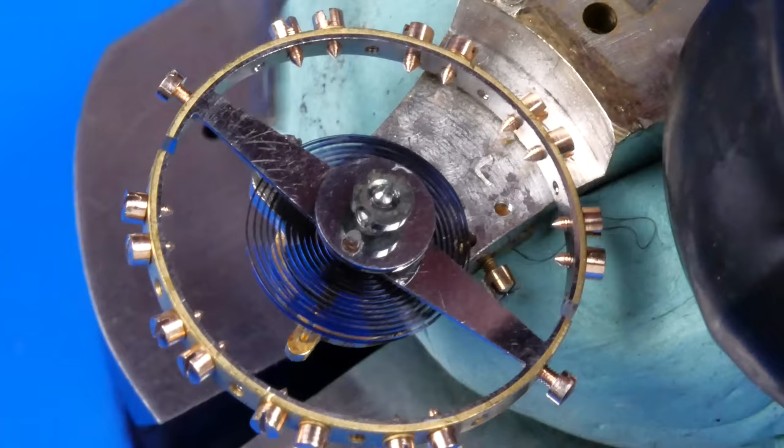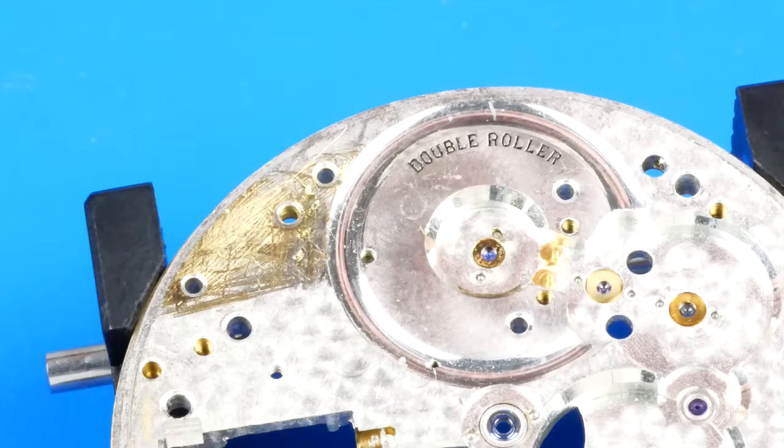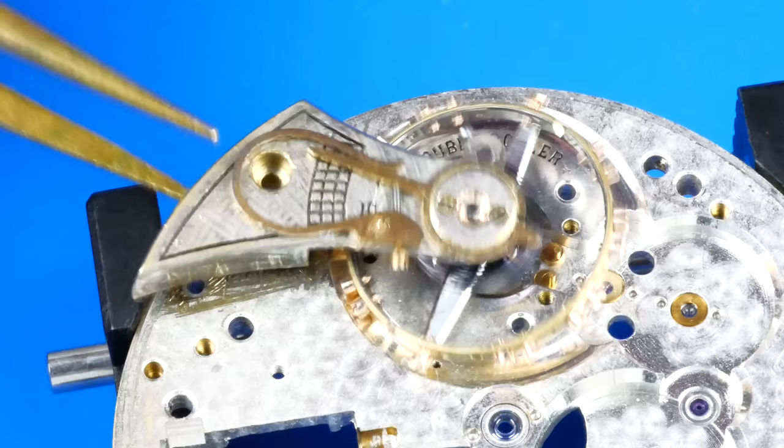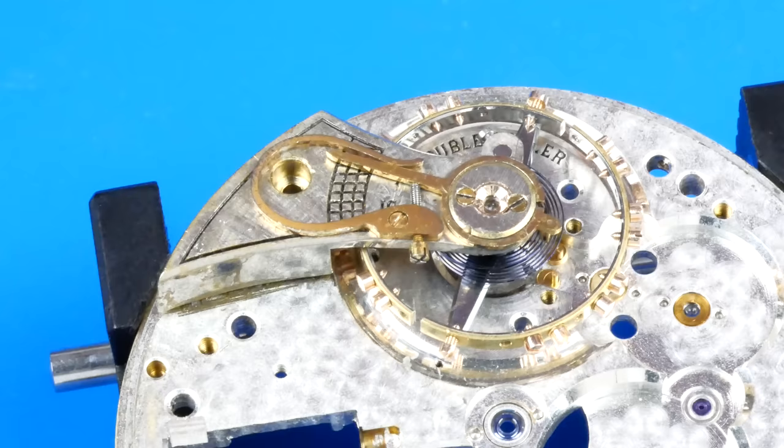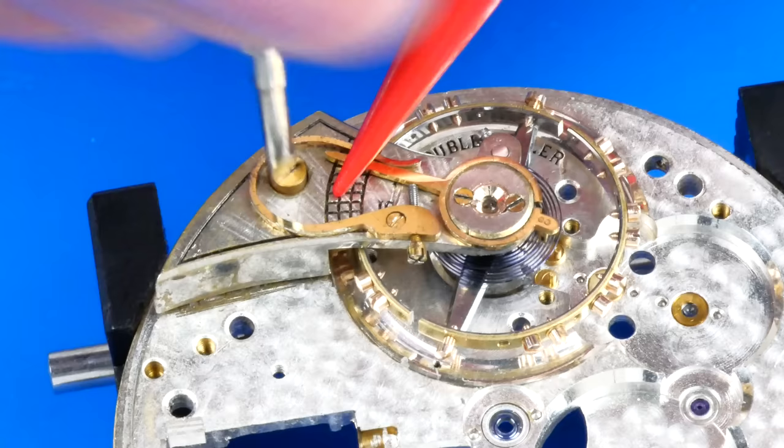The balance is reinstalled to the cock by inserting the hairspring stud into the hole and securing it with the set screw. It's good practice to dry fit the balance as this is typically the source of many issues, and it's much easier to diagnose those issues now than if the movement was fully assembled.